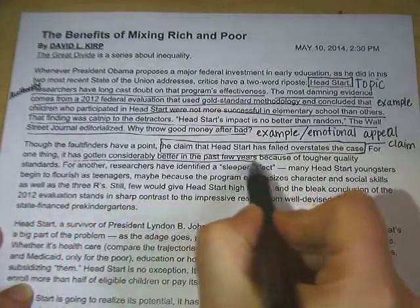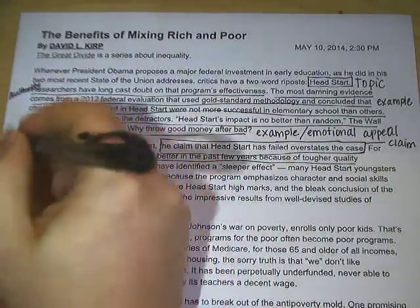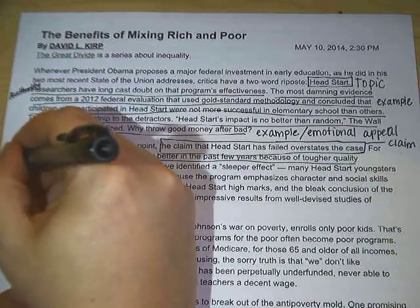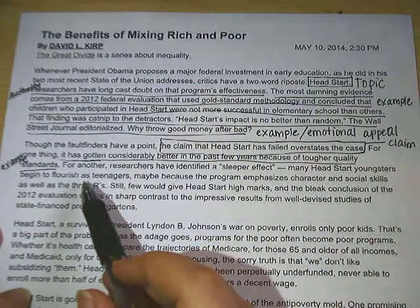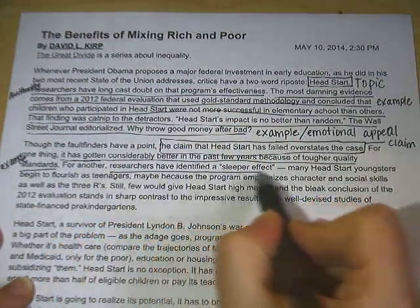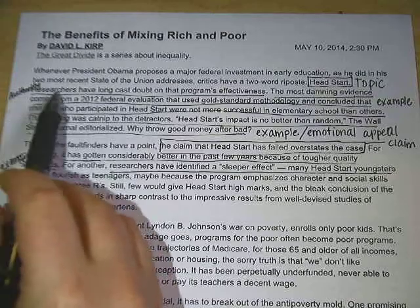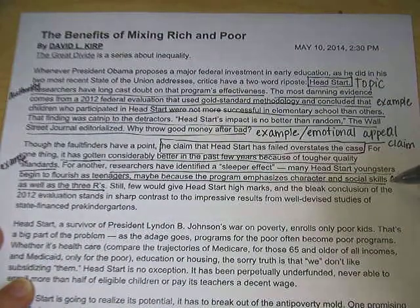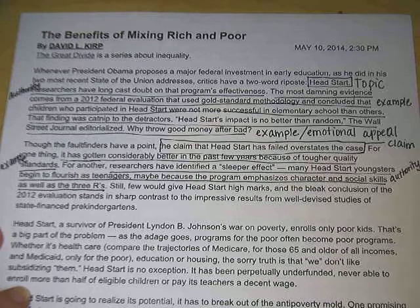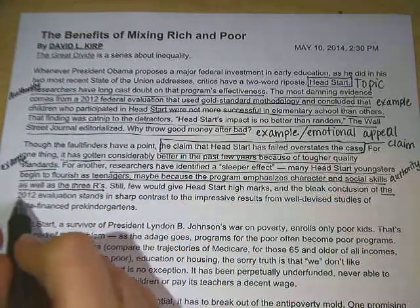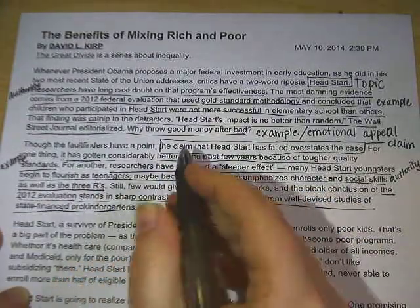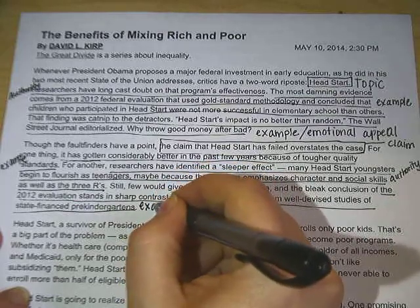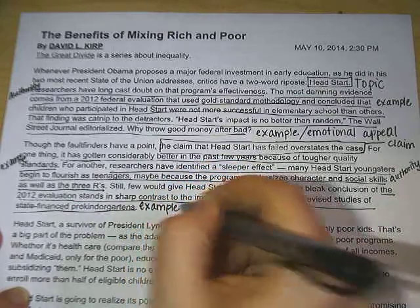Then he gives some evidence. It has gotten considerably better in the past because of tougher standards — so he's giving an example. We see researchers again, which makes this another authority. And then the last sentence references the evaluation again, which we talked about earlier — so this is another example.